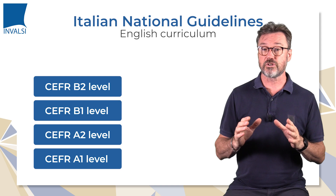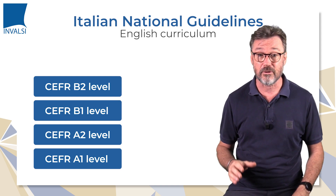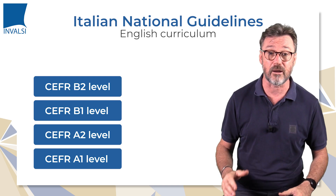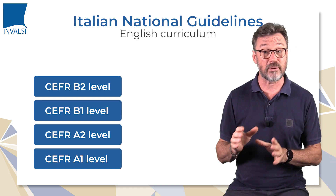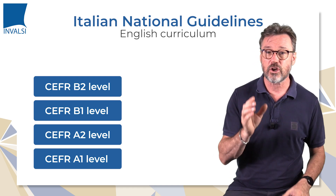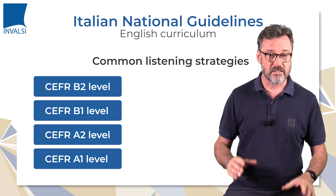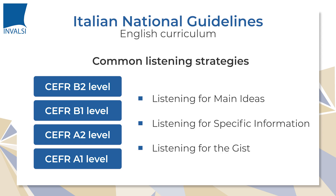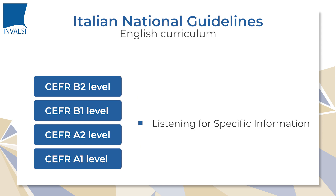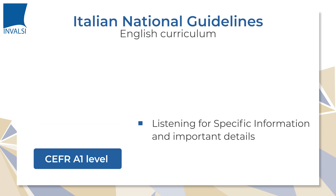The skills students learn at one level will prepare them for higher levels of competence to come. As students progress from level A1 through to B2, we may identify common listening strategies, such as listening for main ideas, listening for specific information, or listening to get the gist of a message. We will be focusing on listening for specific information and important details across all levels, starting from A1 and progressing up to B2.